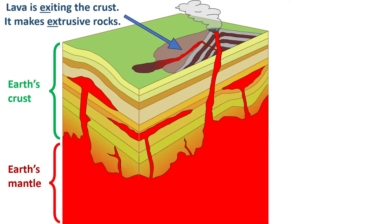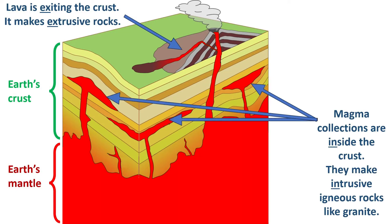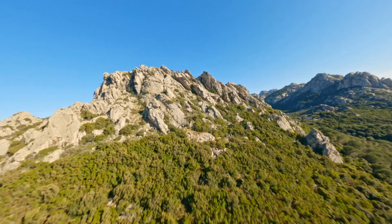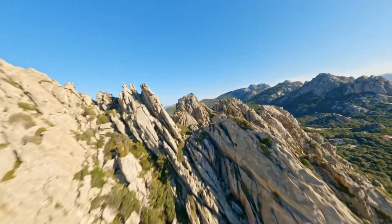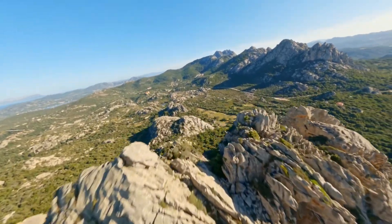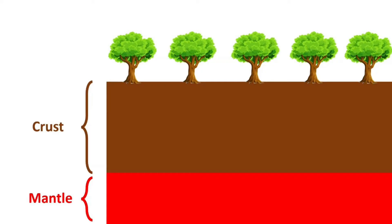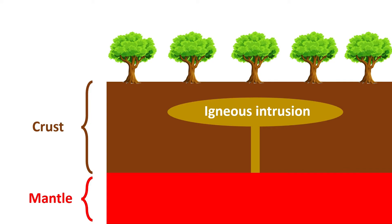Unlike extrusive igneous rocks that exit the Earth's crust quickly through a volcano, the magma that becomes granite stays inside the Earth's crust for a long time. Geologists call granite an example of an intrusive igneous rock because it stays inside the crust for a long time. Magma collections are often more than a mile below the Earth's surface, so it may seem puzzling that we can see intrusive rocks like granite above the dirt.